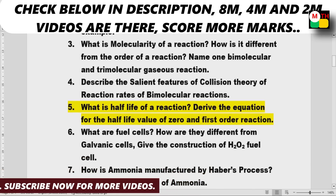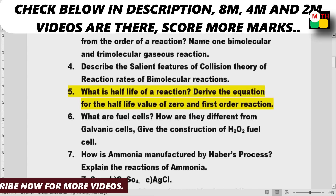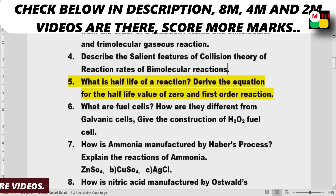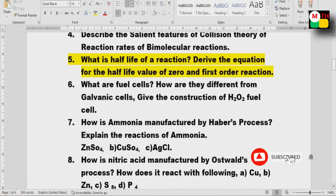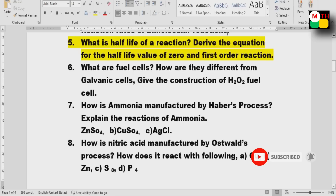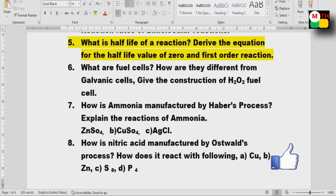Fuel cells are important. Ammonia (NH3) manufactured by Haber's Process — important. Nitric acid manufactured by Ostwald's Process — also important. These are worth 8 marks.